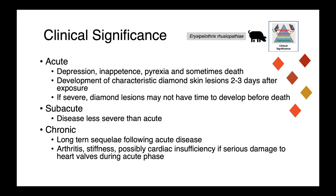In subacute disease, really what we see is a milder form — it's less severe than in the acute syndrome. And then in chronically affected animals, what we're really talking about are the long-term sequelae following acute disease. So these animals are arthritic, with stiffness, and possibly have cardiac insufficiency.